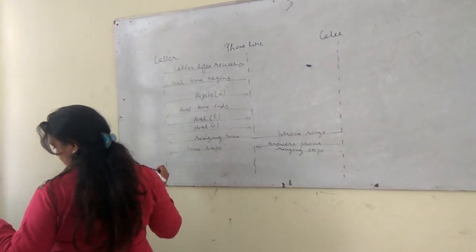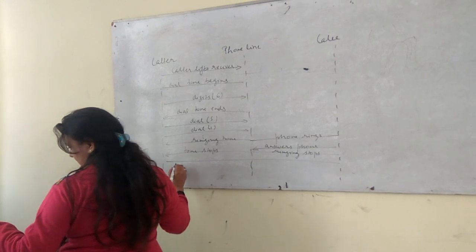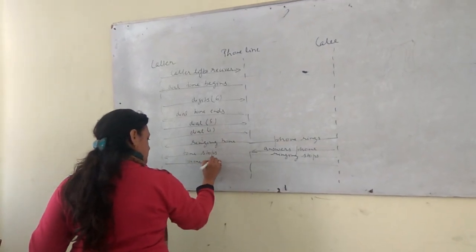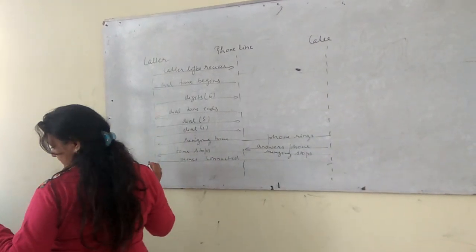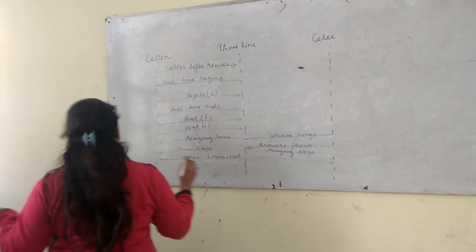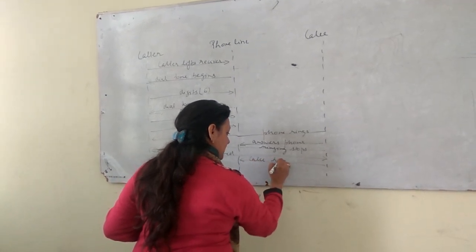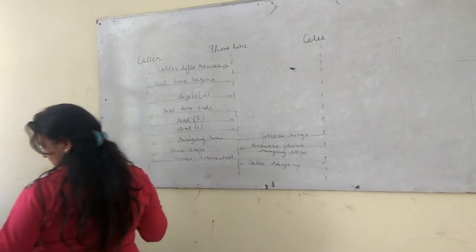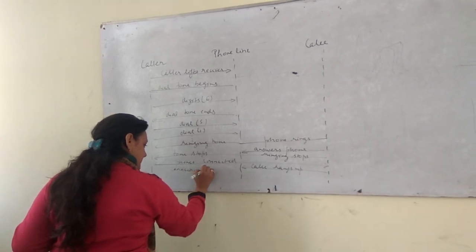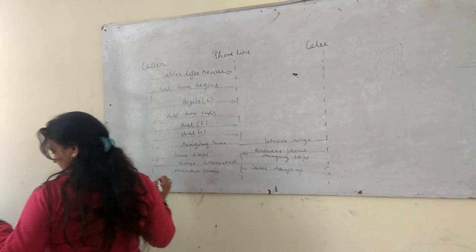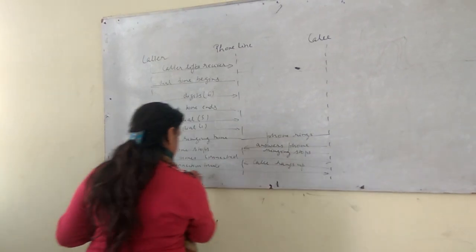The ringing tone — nowadays phones have songs as ringtones — that stops. The next line is phone connected, with bi-directional arrows showing phones connected. Then callee hangs up, meaning after the callee has finished the call, he keeps the phone down. So here, connection breaks — the whole connection which was established breaks.